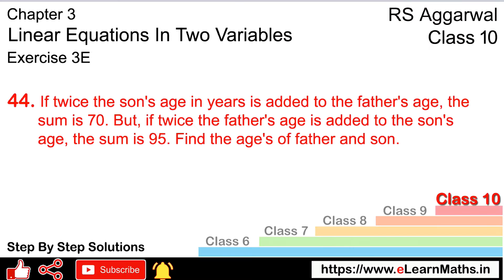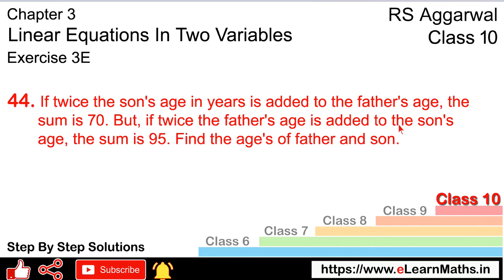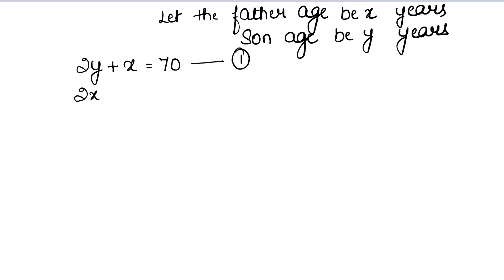For the second equation: if twice the father's age — father's age was x, so twice is 2x — is added to the son's age, plus y, the sum is 95. So 2x + y = 95. This is our second equation.